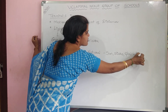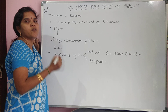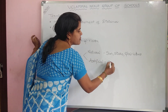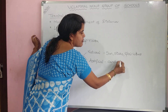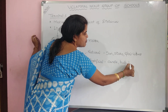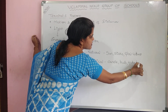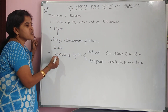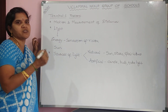Artificial sources of light are those made by man. Examples: candle, bulb, tube light — these are all artificial sources of light. So sources of light can be divided into two categories: natural sources and artificial sources.